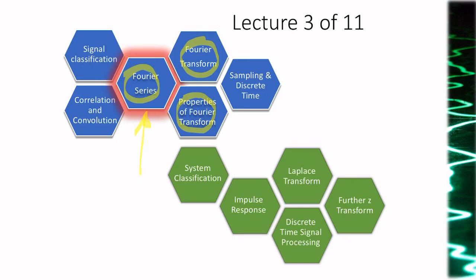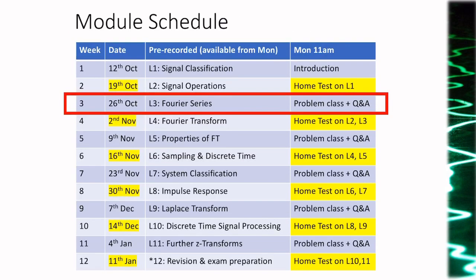Then we'll spend one week on discrete time signals and sampling, and then we'll start talking about systems. We are now in week three. We'll have a problem class on Monday the 26th of October, and you'll have a class test — let's call it a home test — on the following Monday, the 2nd of November. That class test will include the contents from lectures two and three.